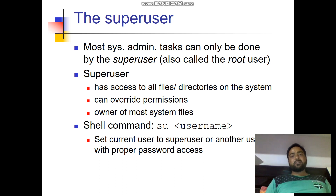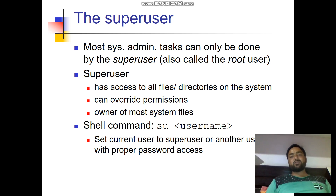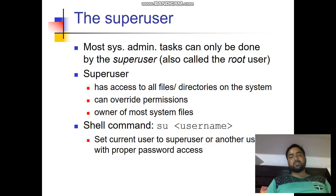Administrative tasks in the system can only be done by the super user. The super user is the main user which has administrative capabilities in the system. We also call the super user the root user, which has root access to the system's core directories and files. The super user has access to all files and directories and can override permissions — whether read, write, or execute — for any user.